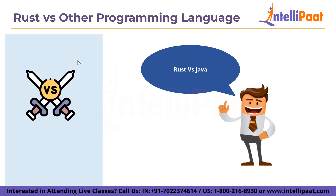Now let's compare Rust with Java. It turns out that Java is significantly slower than Rust, especially when compared to keeping up with C in many domains. You should also consider faster startup times and smaller memory footprint with Rust. Java employs garbage collection for memory management, which reduces performance, though it is worth noting that it simplifies the programming.